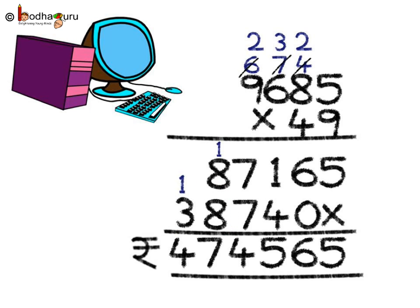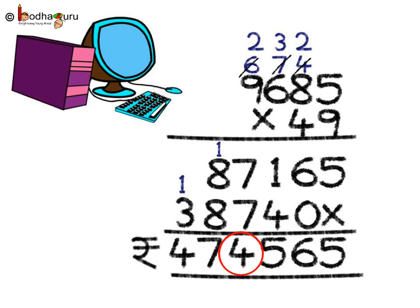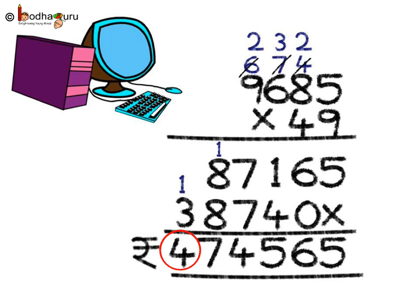Now we add the two rows: 5; 6 plus 0 is 6; 4 plus 1 is 5; 7 plus 7 is 14 — write 4 and 1 is the carry forward; 8 plus 8 is 16, add carry over 1, so 17; lastly 3 plus carry over 1 gives 4. So the answer is 4 lakh 74,565.